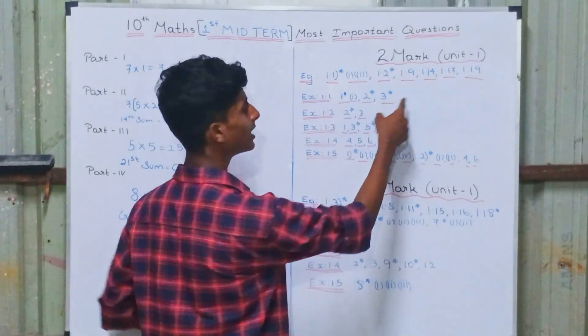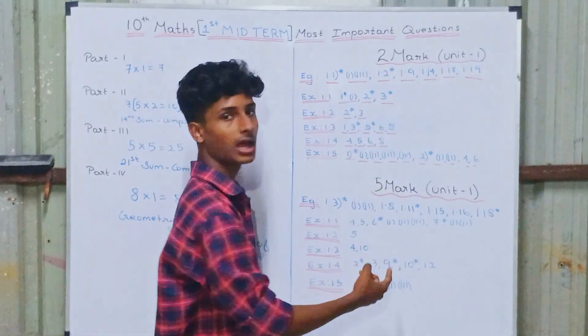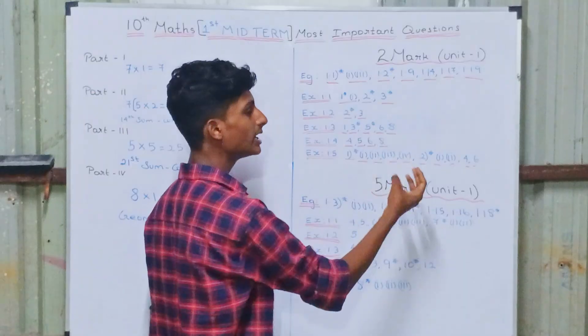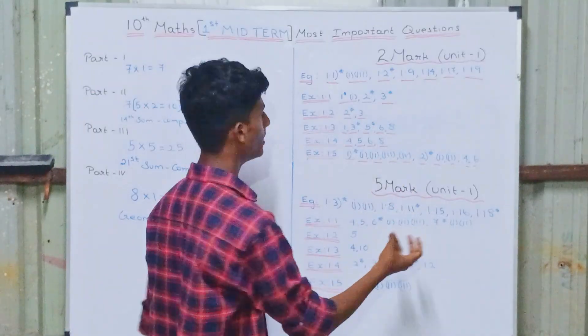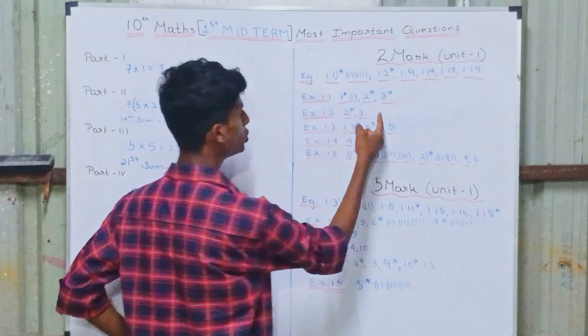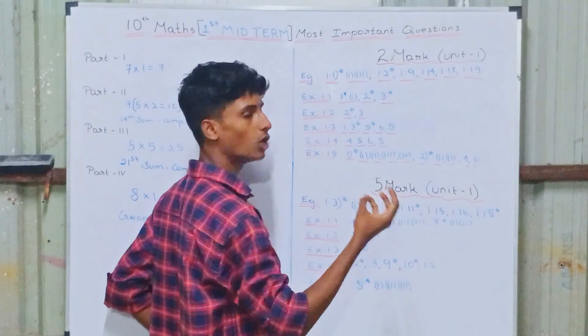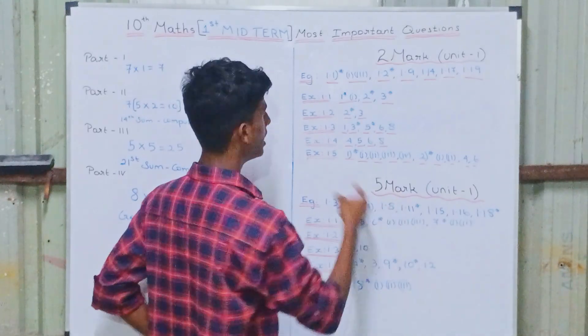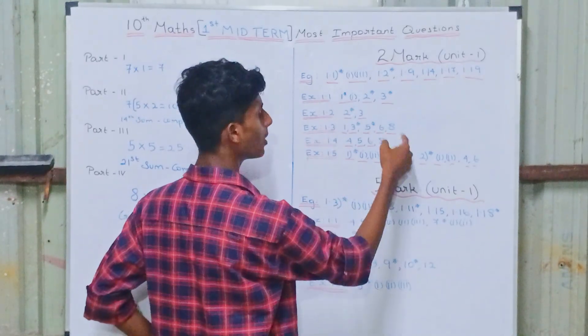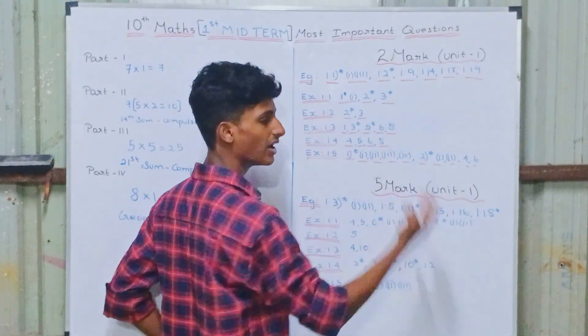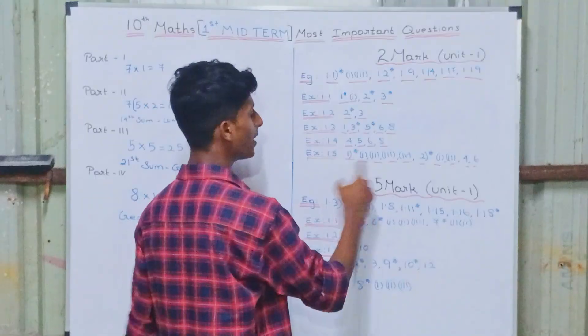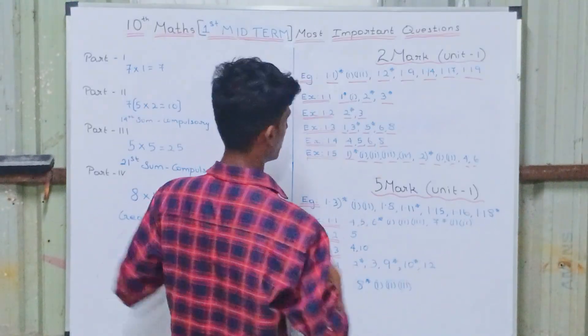For exercise 1.1, you can see the questions on union and intersection. For exercise 1.2, you can see the subset, domain and range. For exercises 1.3 and 1.4, you can see the functions. For exercise 1.5, F.G. sums.